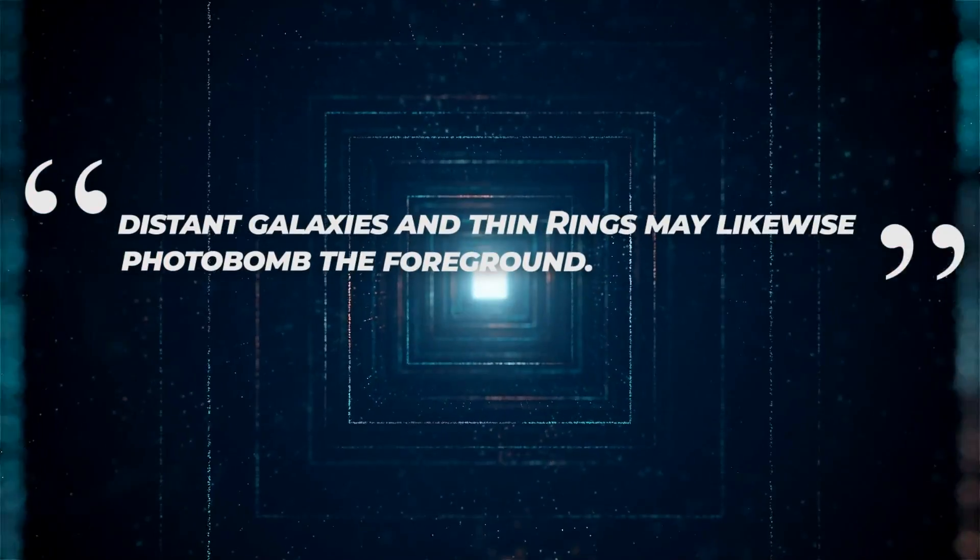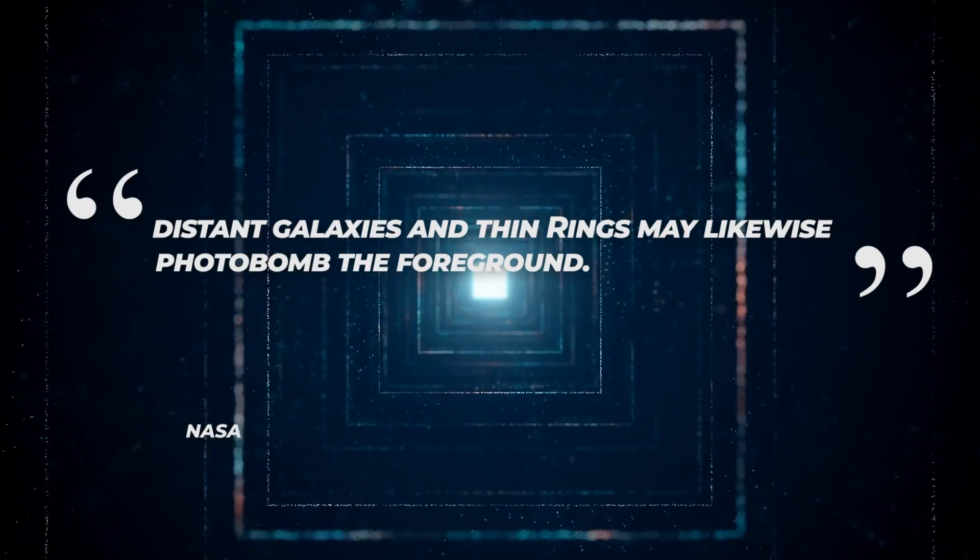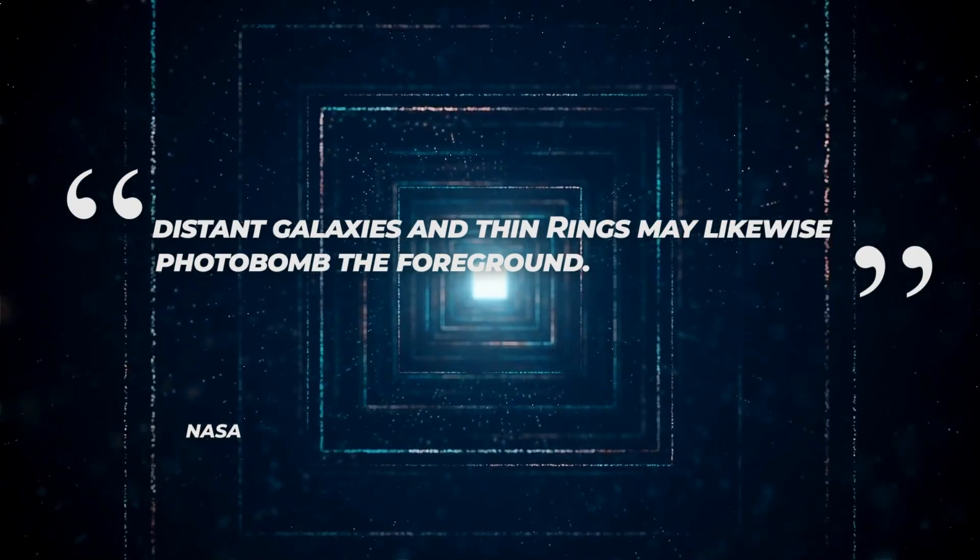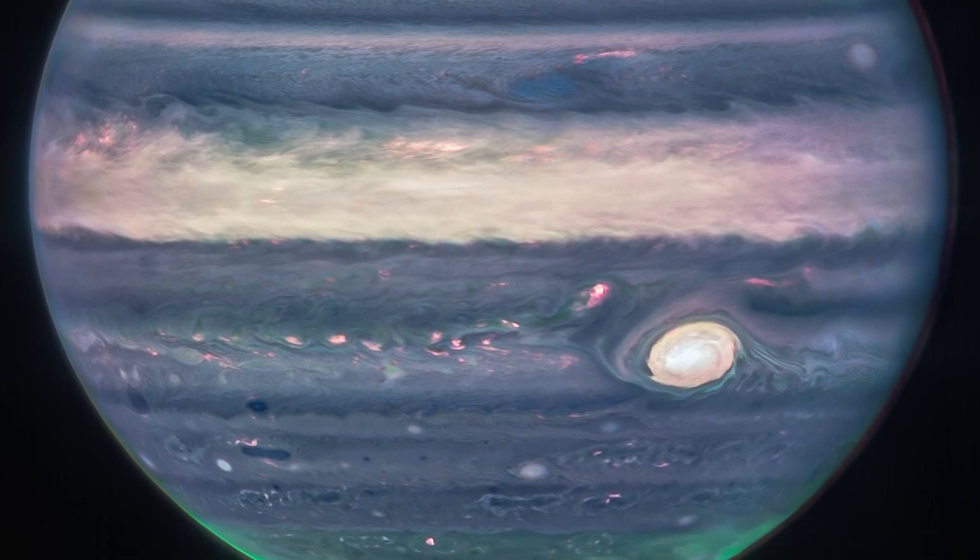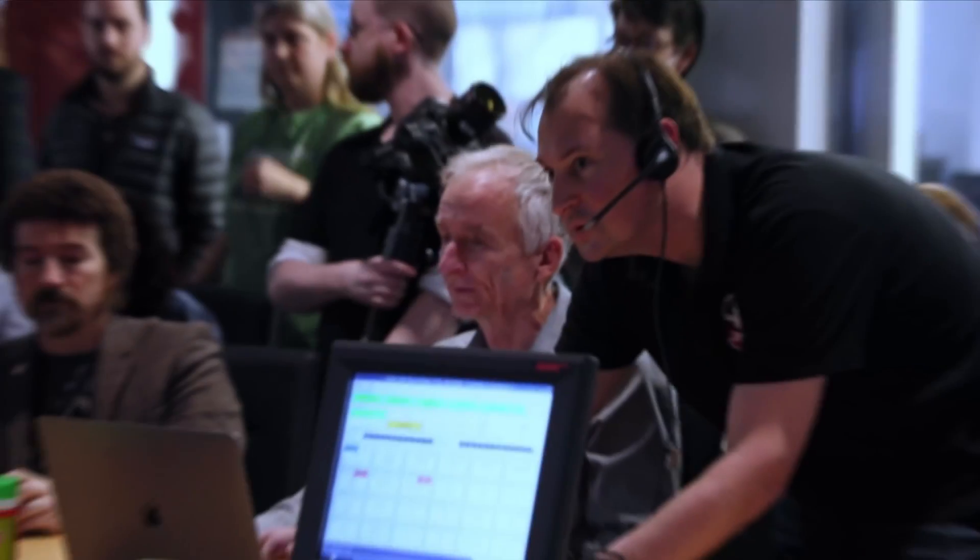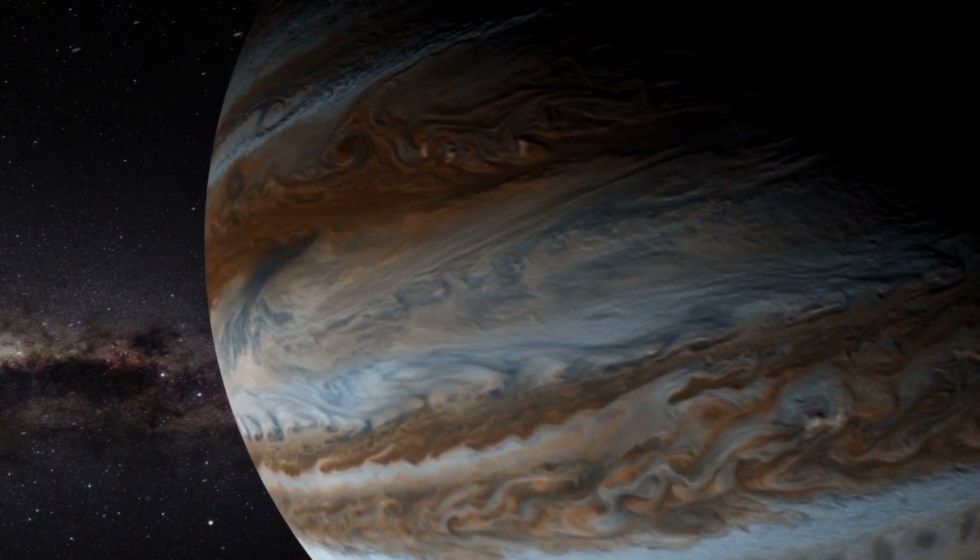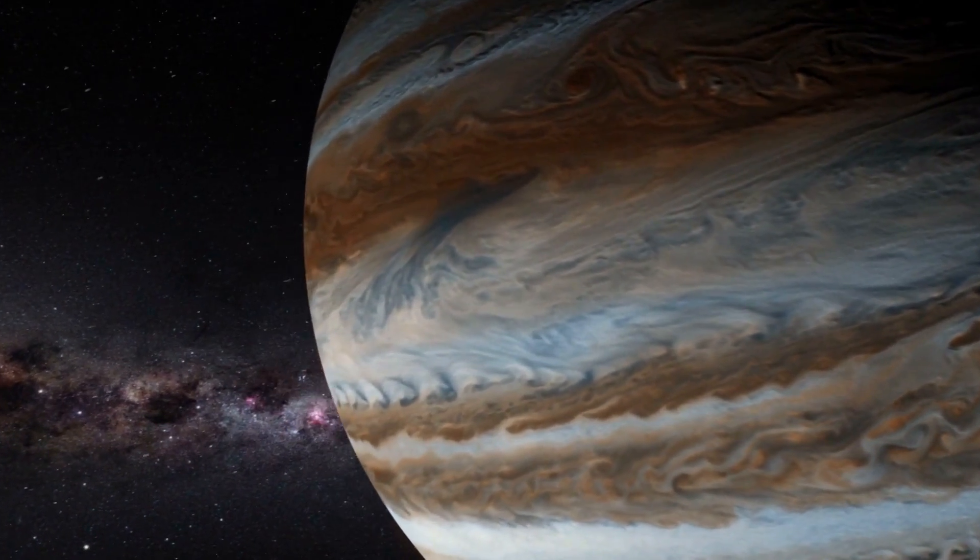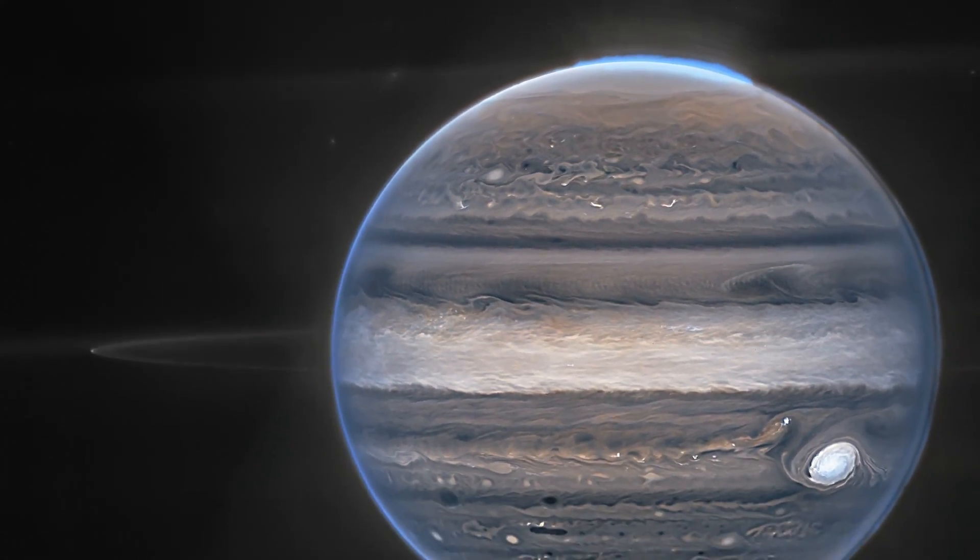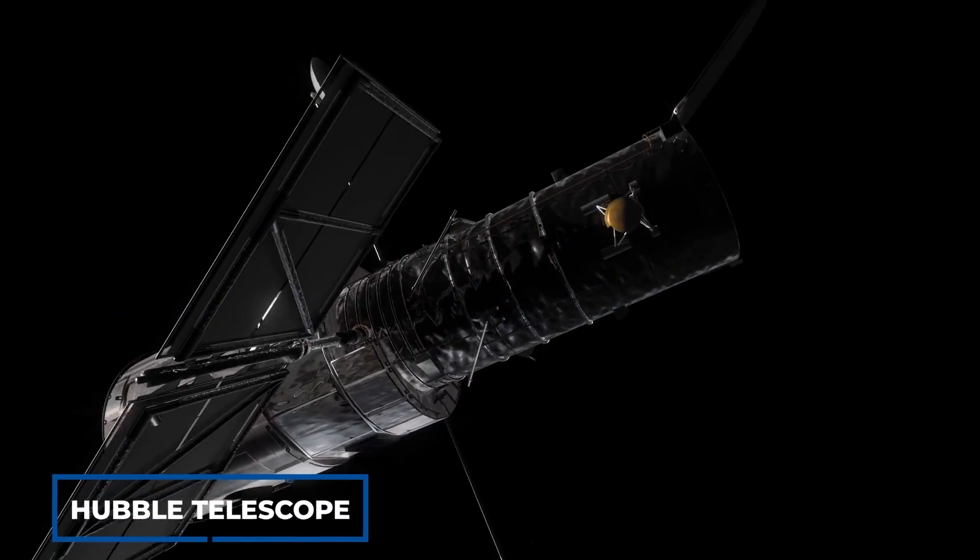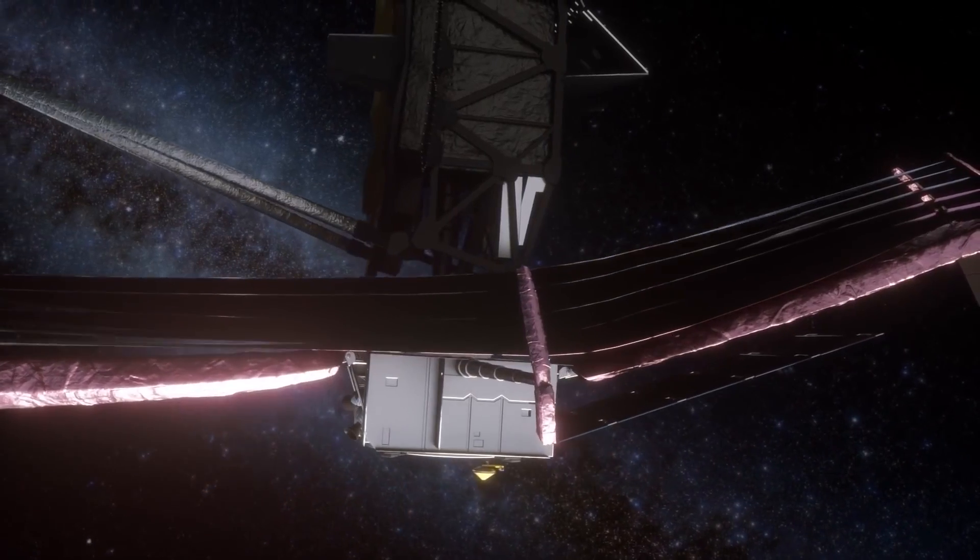According to NASA, distant galaxies and thin rings may likewise photobomb the foreground. The images are supposedly so astonishing that even NASA's top specialists are stunned. Jupiter is surrounded by a brilliant aura and covered in white streaks and patches. The photographs are far more vivid than those captured by the Hubble telescope, which the James Webb telescope succeeds.